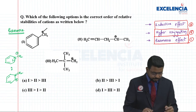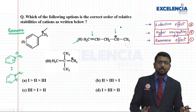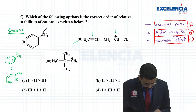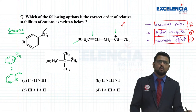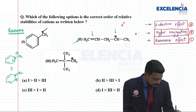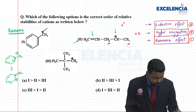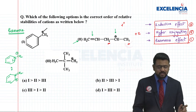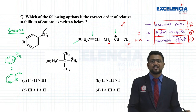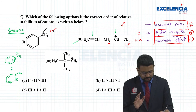The second carbocation has pi electrons and a positive charge, but they are not alternate to each other, so resonance is not applicable. However, it is a secondary carbocation connected to alkyl groups on both sides, giving a plus-I effect, and there are two and three alpha hydrogen atoms respectively, so hyperconjugation also applies. It is relatively more stable, but not as stable as the first one.